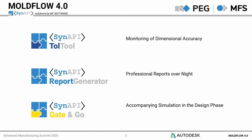The second product is the Report Generator, which supports the creation of reports and shifts the sometimes time-consuming loading of results into the night by batch processing, so that no resources are tied up during the day. And with Gate&Go we are introducing a tool that enables designers to check their components as early as the design phase and thus comply with the economic and technical criteria of their company.